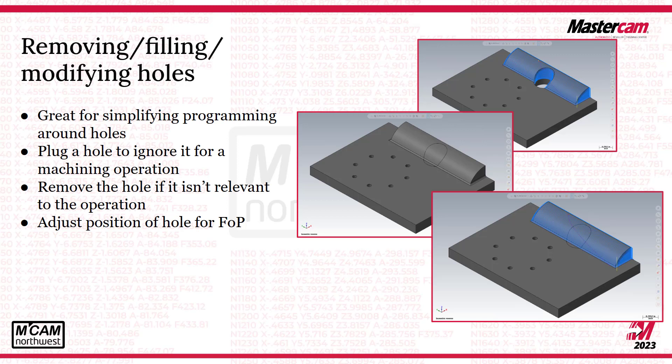Next, let's talk about how we can remove, fill, or modify holes in our parts. The reason you might want to modify holes is to simplify programming. You might have a hole in a face that makes it trickier to create a tool path off of — you might think you need to build a surface — but there are ways around that by using a simple model prep tool to fill up that hole and make it a nice, clean piece to machine. You can also simply remove holes if they're not relevant, adjust positions, and more. Being able to adjust all these features on the fly is what makes model prep so powerful.